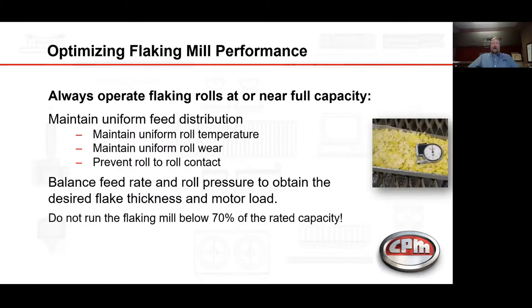We want to always operate the flaking mill at or near full capacity. We need to maintain a uniform feed distribution, which will allow us to maintain a uniform roll temperature, maintain uniform roll wear, and prevent roll-to-roll contact. We want to balance the feed rate and roll pressure to obtain the desired flake thickness and motor load. Do not run the flaking mill below 70% of the rated capacity. If your plant capacity changes, don't simply throttle back all the flaking mills — if you're at 70% or lower, look at turning off a flaking mill or two.